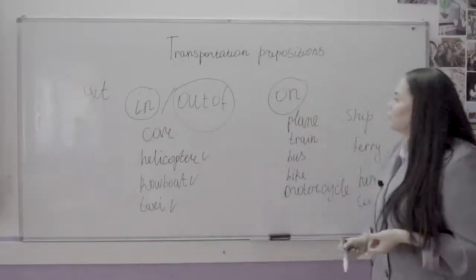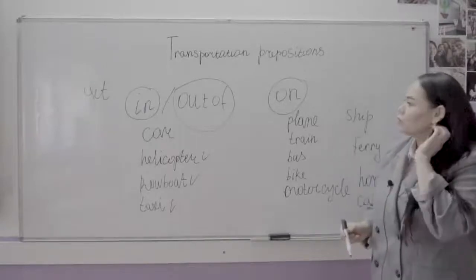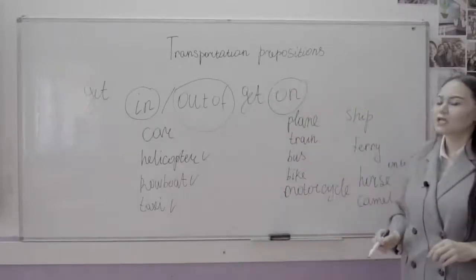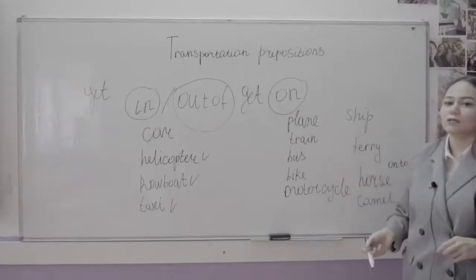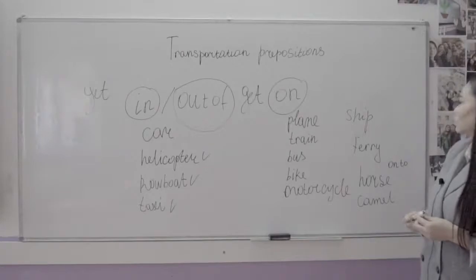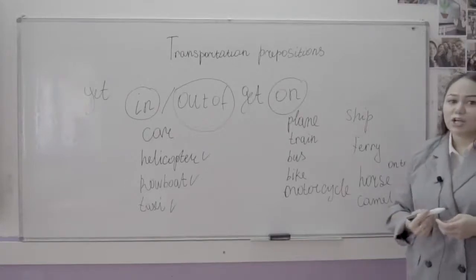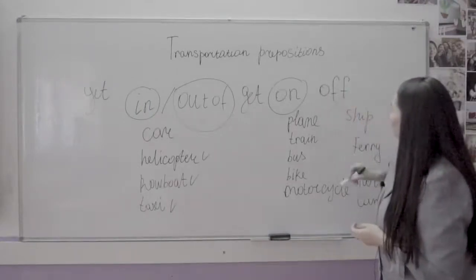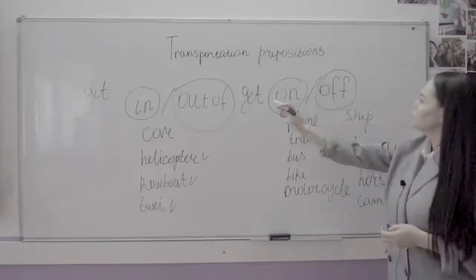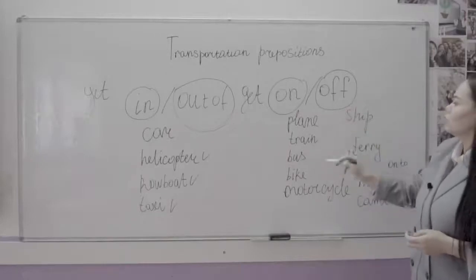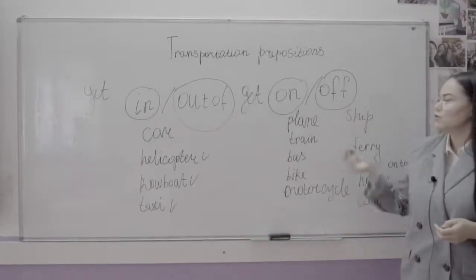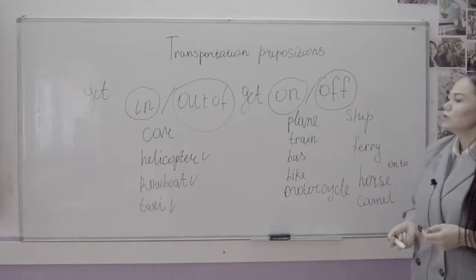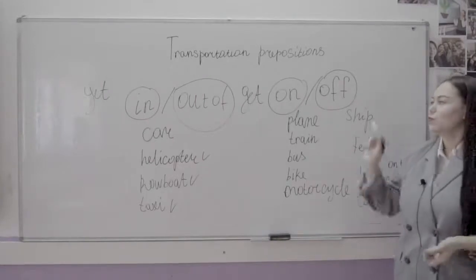With preposition 'on,' when you start travelling you get on — you get on a plane, get on a train, get on a bus, get on a bike, get on a motorcycle, get on a ship, get on a ferry. When you finish travelling, you get off. Also, when you travel on foot, we say I travel on foot, and when you finish, you can get off and relax.